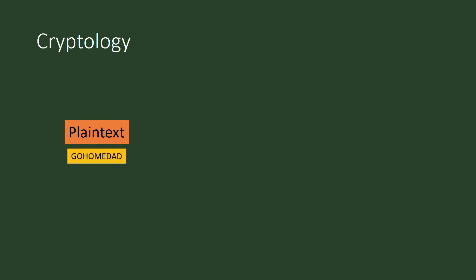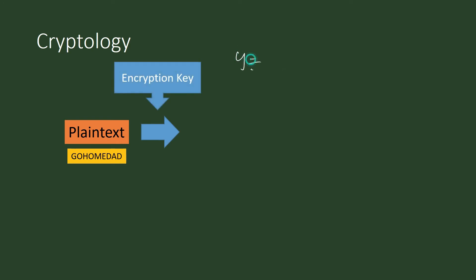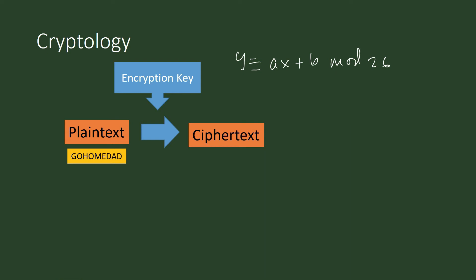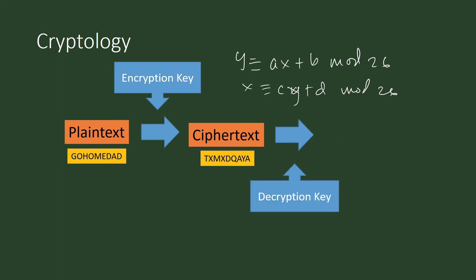Let us review what takes place in cryptology. You have a plain text which you will send as a secret code with the help of an encryption key. The encryption key takes the form: Y is congruent to A times X plus B, modulo 26. The output is a ciphertext. The student who receives the ciphertext must produce the decryption key, which is the solution for X in the congruence equation — so this becomes X is congruent to C times Y plus D, modulo 26. Upon applying the decryption key on the ciphertext, it will reveal the secret message, which is just the plain text of the original message.